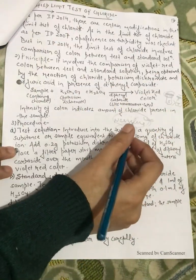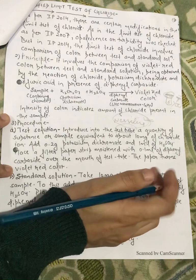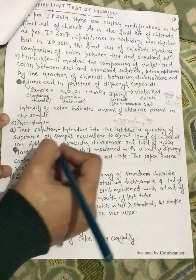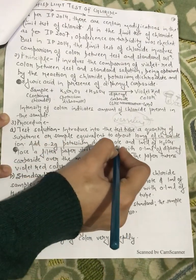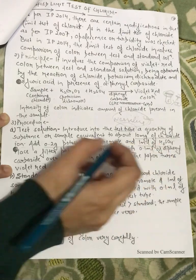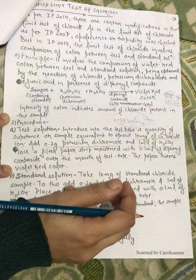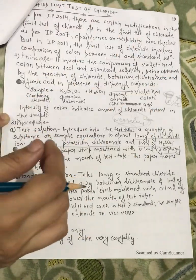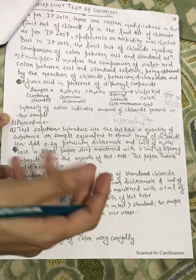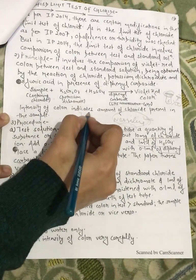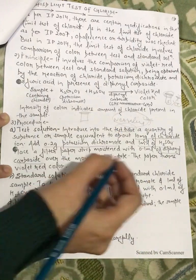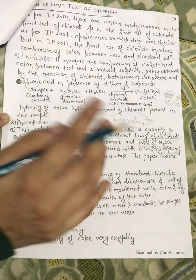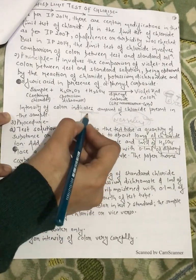We have a quantity of a substance or a sample equivalent to about 10mg of chloride. Add 0.2g potassium dichromate and 1ml of H2SO4 sulfuric acid. Then we will take a filter paper which will moisturize our diphenyl carbozide. We will place it in 1ml of diphenyl carbozide. Then we will place it in Nessler cylinder. The paper turns violet red color when we react to this reaction. The filter paper will change the color as well.